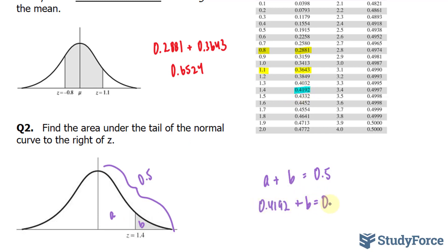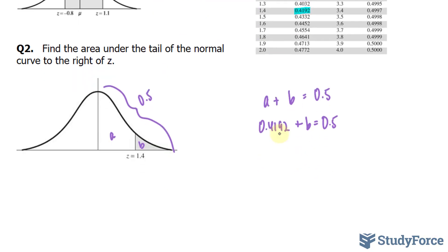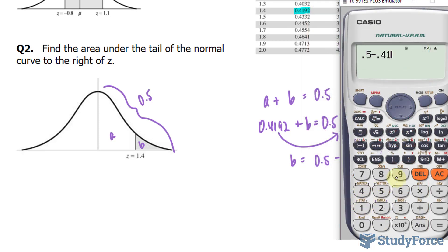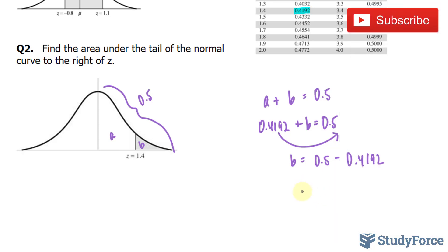So I'll rearrange this and we end up with the statement 0.5 minus 0.4192. Using our calculator 0.5 minus 0.4192 and we end up with 0.0808. Therefore, the shaded area represents 0.08% of the normal curve.